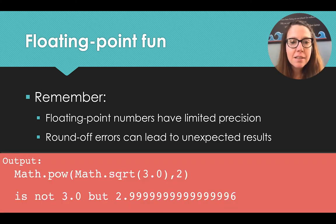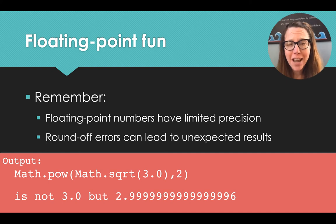And so these floating point numbers have limited precision. And round off errors can lead to some unexpected results. For instance, our example that the square root of 3 squared is not 3, but it's actually 2.999999996.